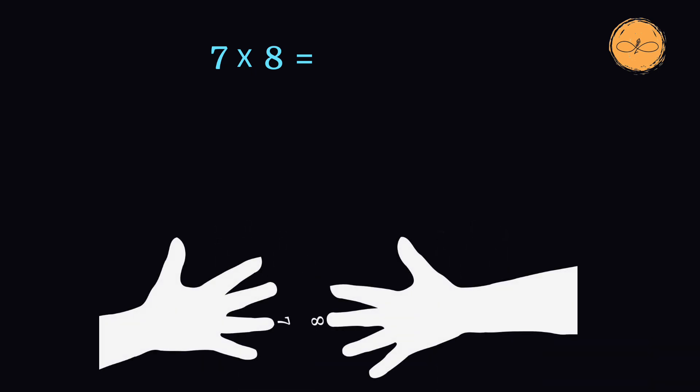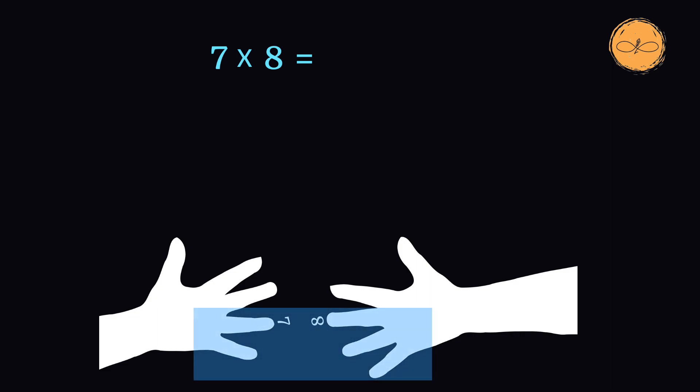We'll rotate our left hand so we have one finger being 7, and we'll rotate our right hand to line up the number 8. Now we'll count the number of fingers that are below the two fingers which are touching. We have two fingers on the left hand and three fingers on the right hand, which is a total of 5 fingers.